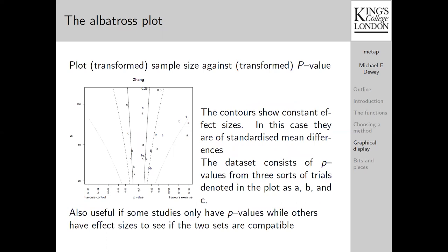Another plot which I provide is the albatross plot. This plots on the y-axis, a transformation of the sample size, on the x-axis, the transformed p values. And the contours here show constant effect sizes. In this case, I've chosen standardised mean differences. In this particular example, there are three different sorts of trials being considered here. And they're labelled in the plot A, B and C. And I think you can see that on the whole, the A's lie rather towards the right-hand side and the C's rather towards the left-hand side. There's some evidence, certainly, that the trials are of different types.